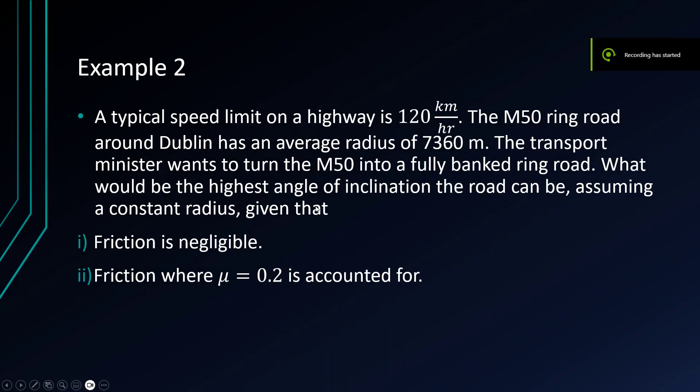So here's a much more complex question. A typical speed limit on a highway is 120 kilometres an hour. The M50 is a ring road around Dublin and has an average radius of 7,360 metres.